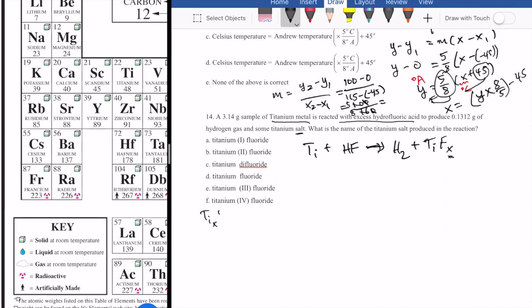Why is the formula TiFx and not TixFy? Well, F is a minus one ion, so if Ti is plus one, the formula would be TiF. If Ti is plus two, the formula would be TiF2, etc. The Ti never has a subscript, but the F would have a subscript because F is negative one. That's why the formula has to be TiFx. We have to figure out what x is.